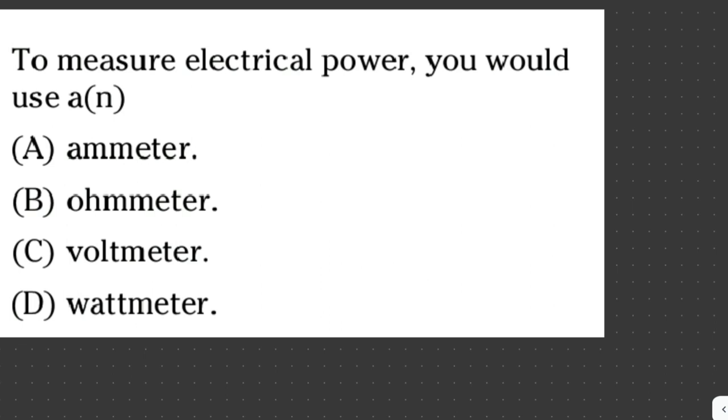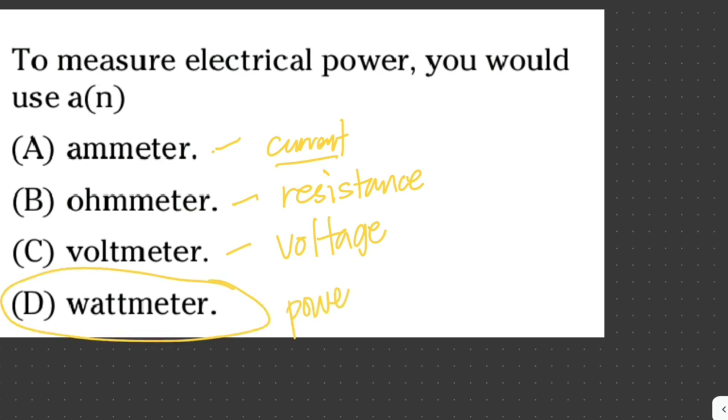To measure electrical power, you would use a blank. Ammeter, ohmeter, voltmeter, wattmeter. Electrical power is measured in watts. Ammeter measures current in amperes. Ohmeter measures resistance in ohms. Voltmeter measures voltage in volts. Wattmeter measures power in watts. So the answer here is letter D, wattmeter.